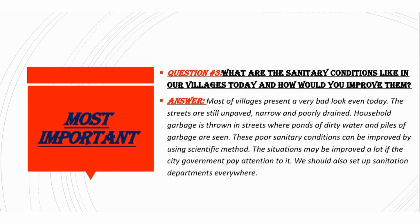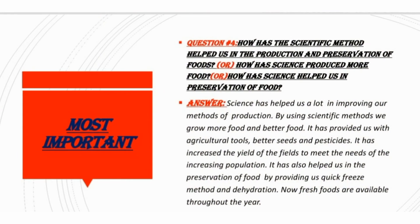Village streets are narrow — تنگ ہیں — and poorly drained. Household garbage is thrown in the streets where ponds of dirty water and piles of garbage are seen — گندے پانی کے تالاب اور کوڑا کرکٹ کے ڈھیر دکھائی دیتے ہیں. These poor sanitary conditions can be improved by using the scientific method. Conditions can be greatly improved if the city government pays attention to it and introduces better systems, whether in the city or the village.